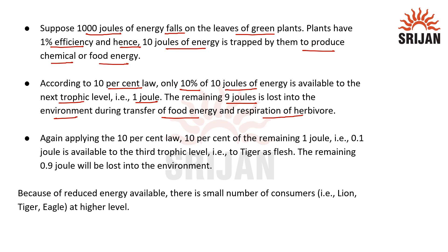Next, again applying the 10% law, 10% of the remaining 1 joule — that is 0.1 joule — will be available for the third trophic level, i.e. to the tiger as flesh, whereas the remaining 0.9 joule would be lost to the environment. Because of this reduced energy available, there is a small number of consumers at the higher trophic level.